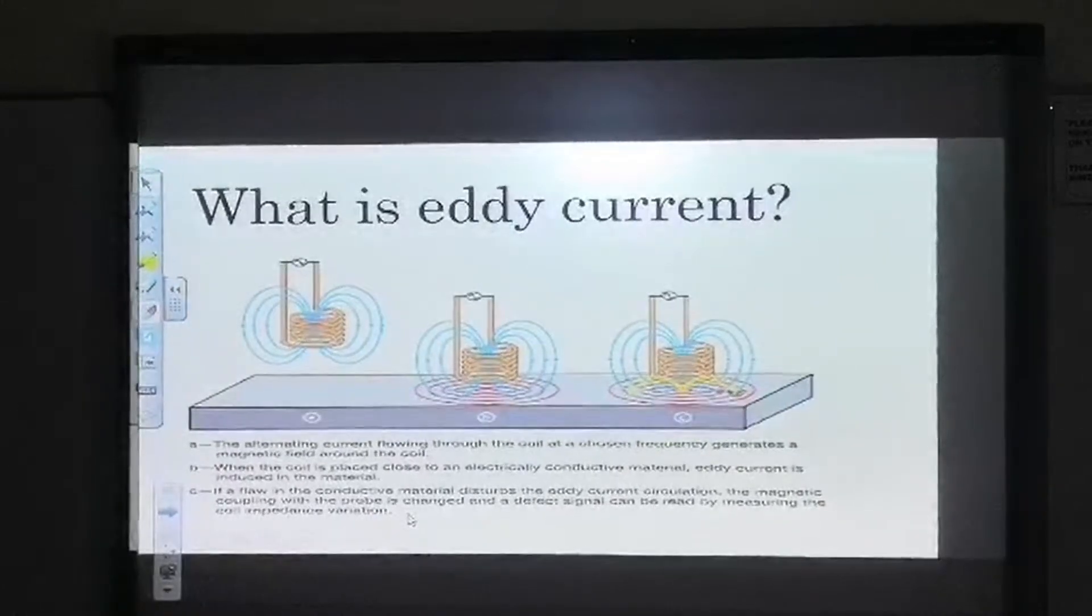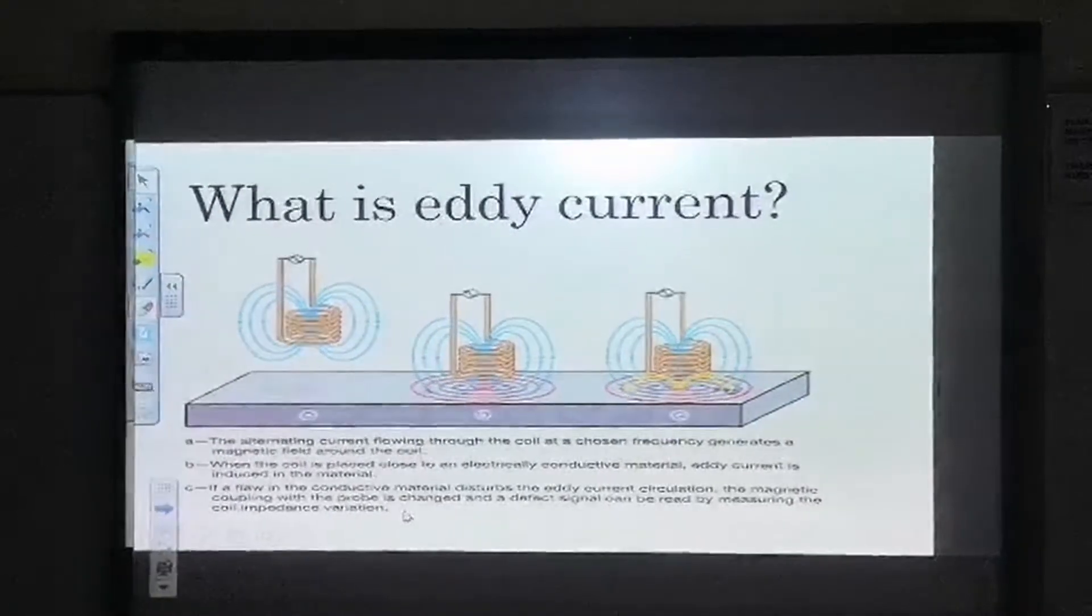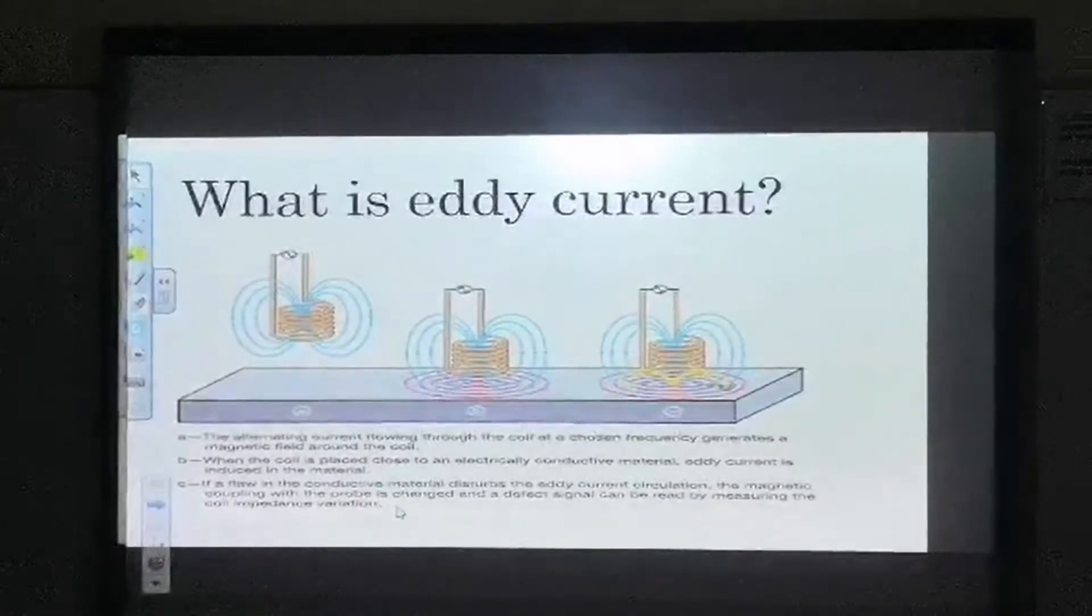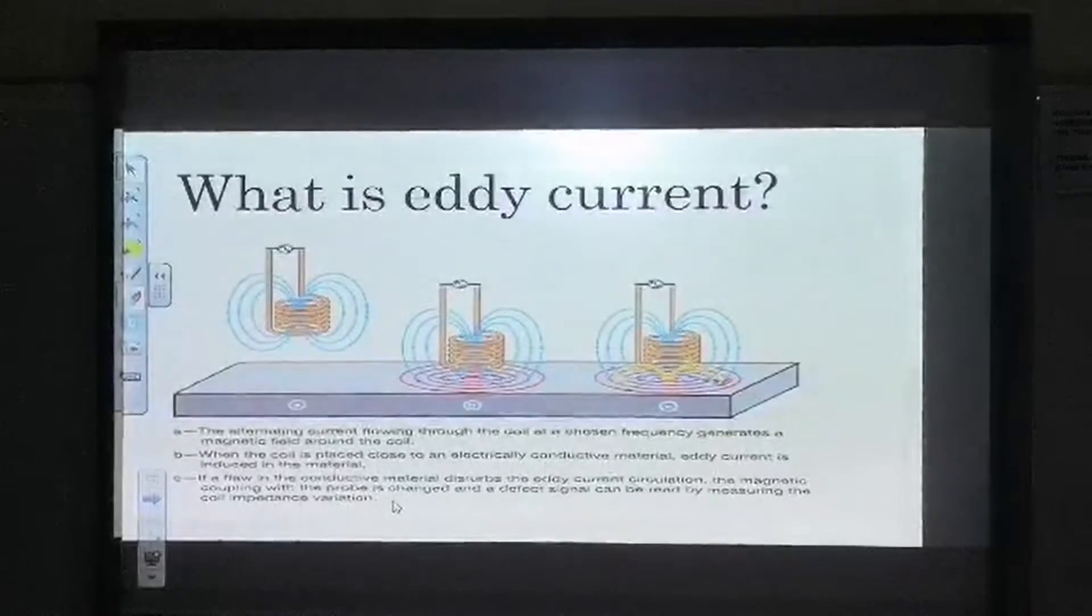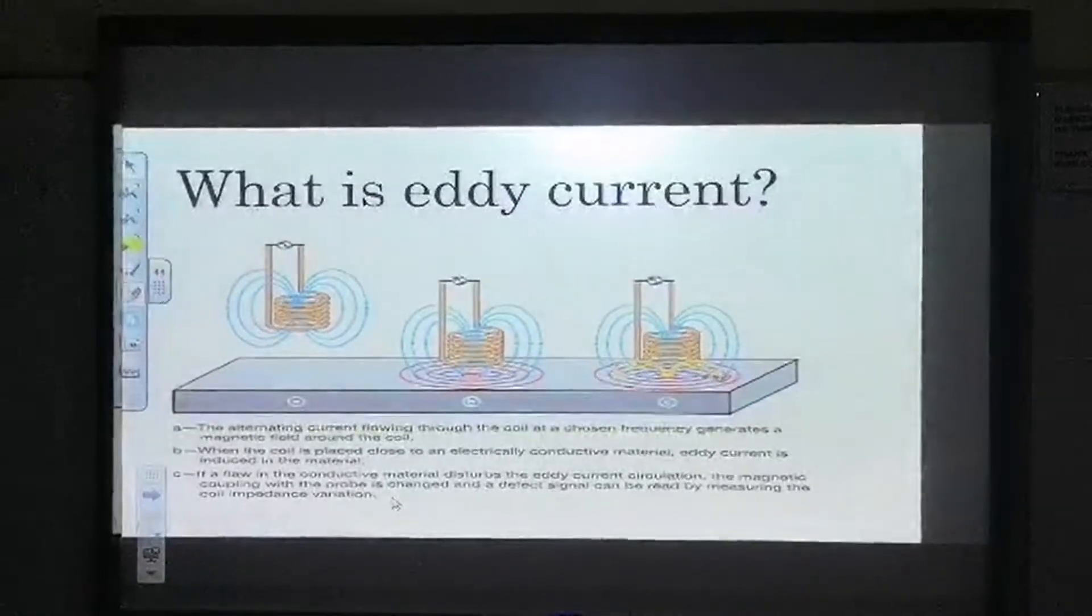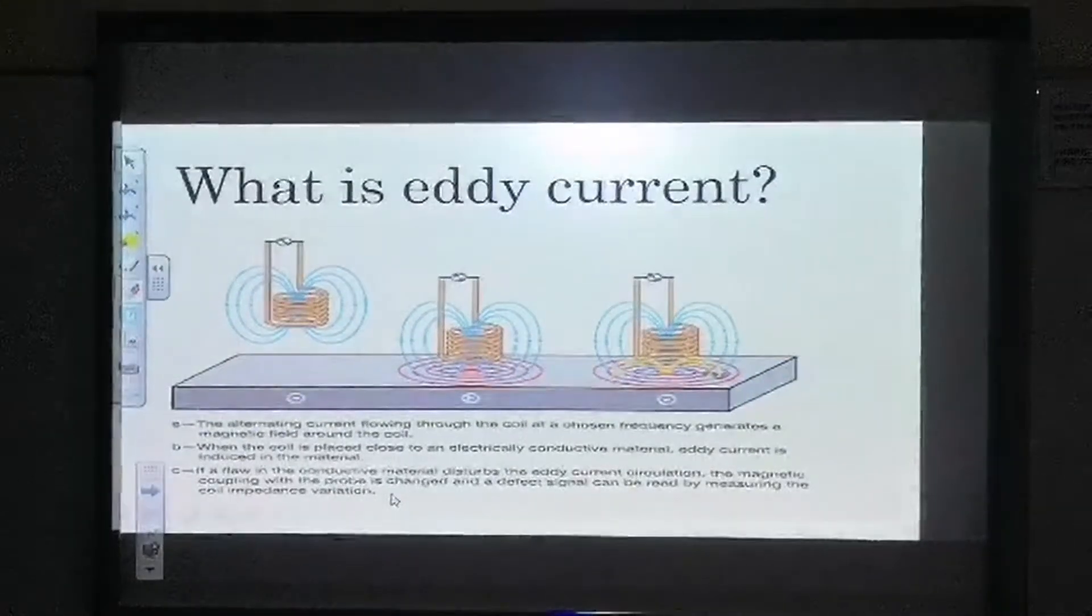Lenz's law states that the direction of magnetically induced current, like an eddy current, will be such that the magnetic field produced will oppose the change of magnetic field which created it. This resistance created by the opposing magnetic field is exploited in eddy current braking, which is commonly used as a method of stopping rotating power tools and roller coasters.